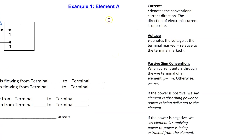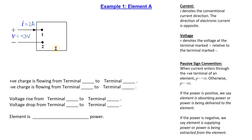First, consider ideal basic circuit element A. Recall that I denotes the conventional current direction. In this case, I has a positive value of plus 2 amps. Thus, the given conventional current direction is the direction of the positive charge. We can see that the positive charge is flowing from terminal 1 to 2 in this direction. Thus, we can record the result as shown.